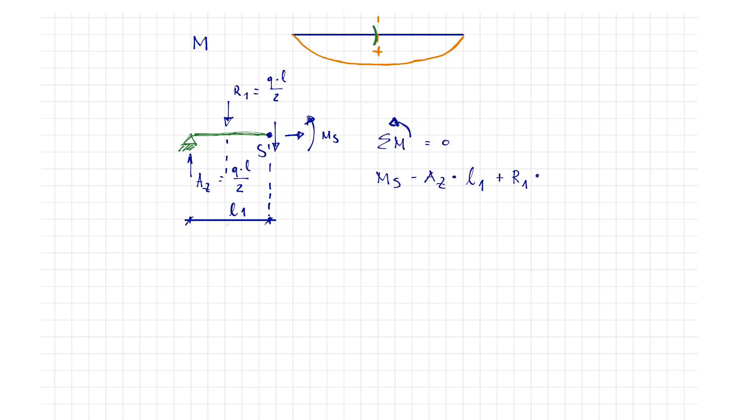On the right, of course, is 0. Lever arm 1 is equal to L through 2 and lever arm 2 is half of the span length, thus L through 4.